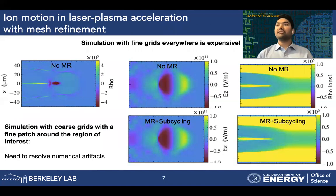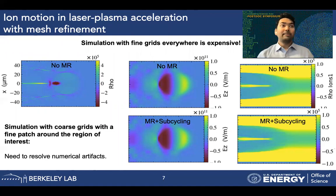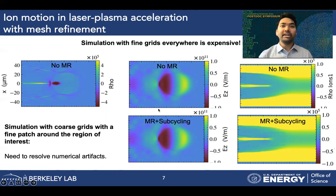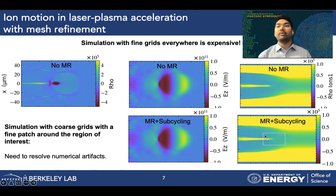Let us look at one set of results we have recently obtained. The top row has been obtained without the mesh refinement feature, so we have fine resolution everywhere in the computational domain, which is very expensive. I'm showing the plasma bubble structure — the charge density plot on the left, the longitudinal electric field EZ used to accelerate the electrons in the middle panel, and the ion density plot on the right, which is what we are interested in. On the second row, I'm showing simulation with a coarse grid with a fine patch around the region of interest. We can reproduce the results qualitatively using mesh refinement with sub-cycling, but there are some numerical artifacts visible in the ion density plot inside the fine patch that we are working to resolve.